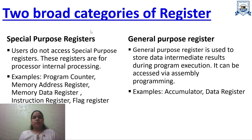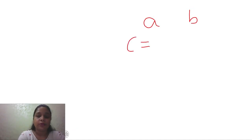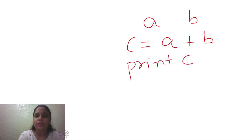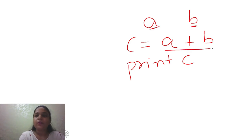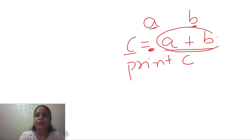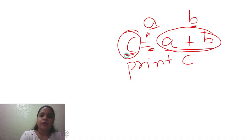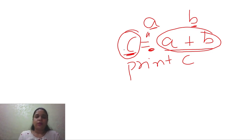Let's take the example of adding two numbers in C. You will need two variables A and B, a third variable C, then do C equals A plus B, and print C. This whole processing is done with the help of registers. A and B will be stored in registers. Before the result is given to C, it can be stored in between — the result is evaluated and stored temporarily in a register.